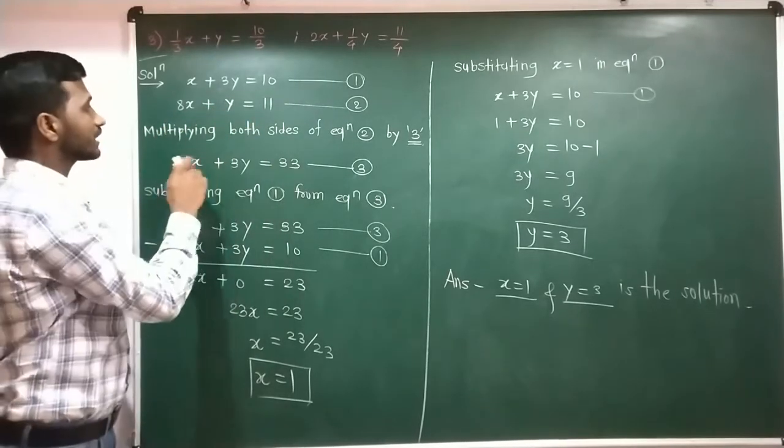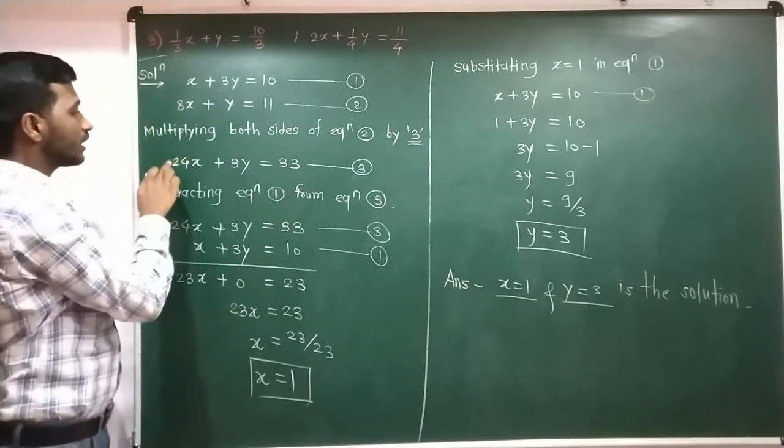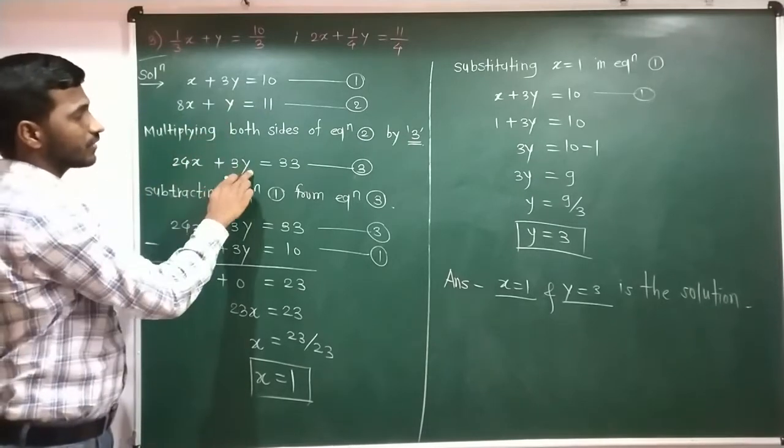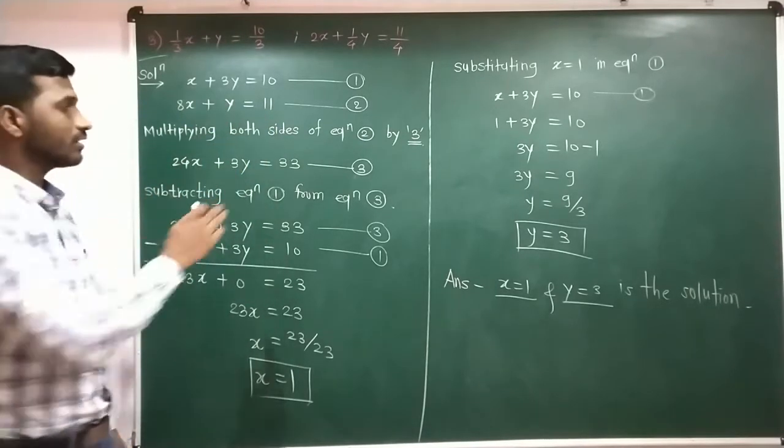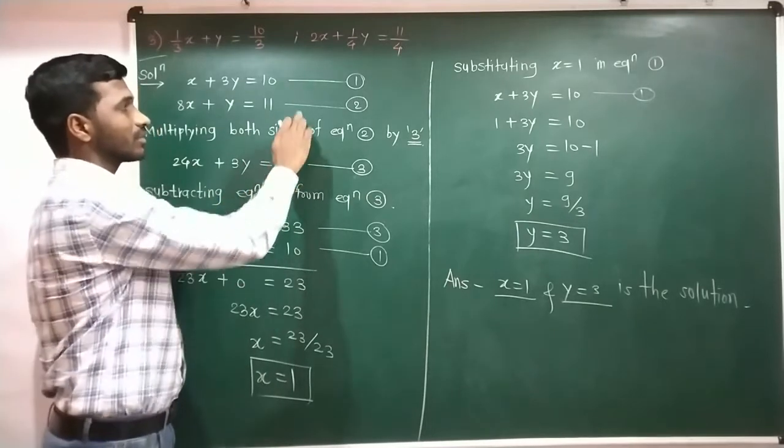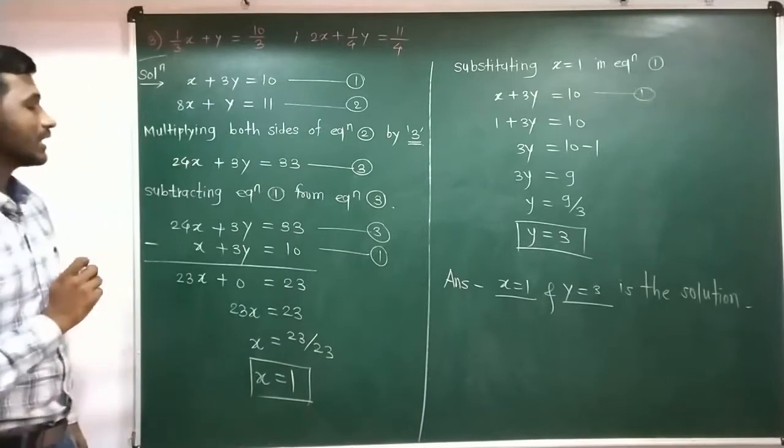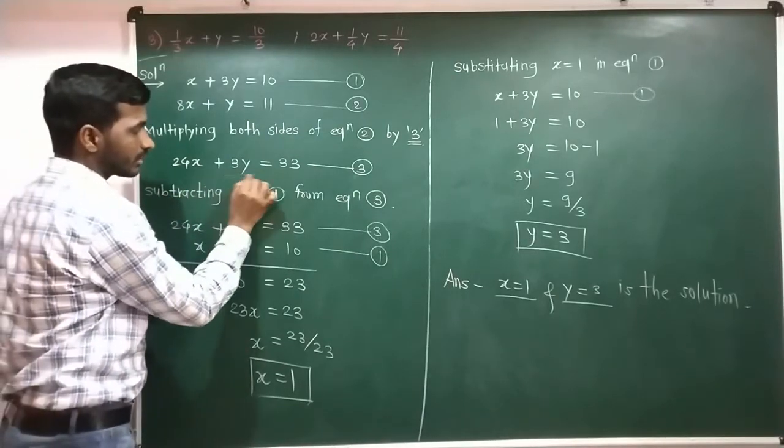How is that? 3 into 8 is 24x. This means 3 into y is 3y. And 11 into 3 is 33. This is going to be equation 2. We modify equation 2, taking y to 3y.